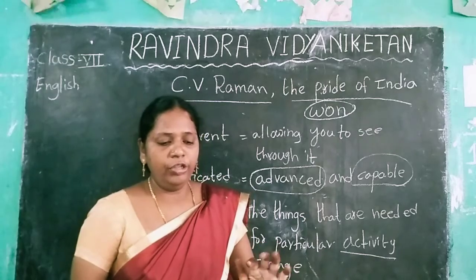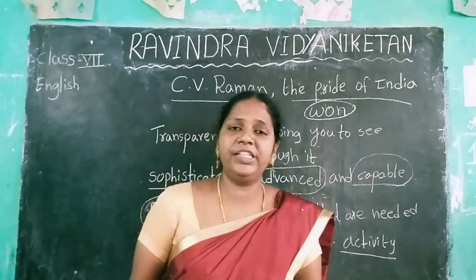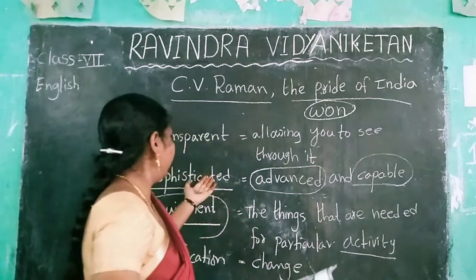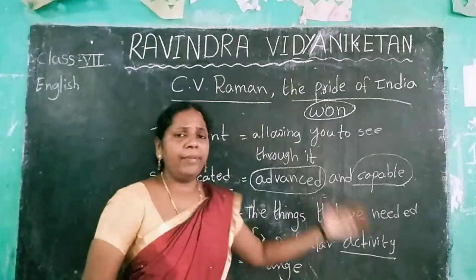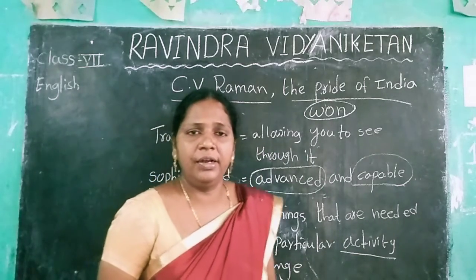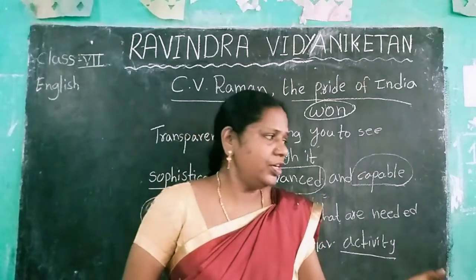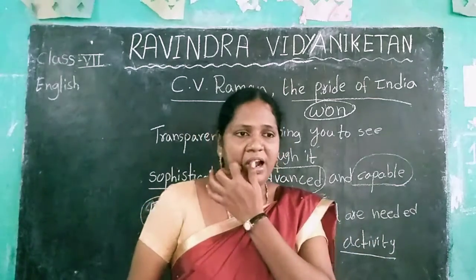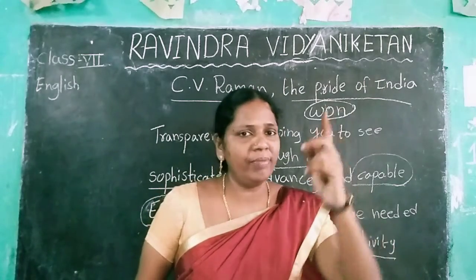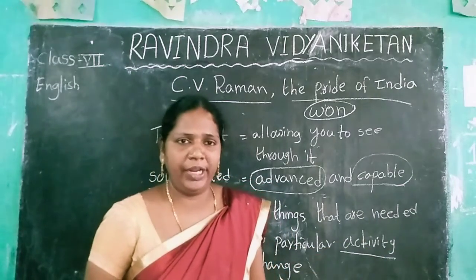The 4th and 5th paragraphs are now completed. Read these paragraphs and underline the hard words — modification, equipment, sophisticated, transparent — and write their meanings. You can search the meanings at the back of the book, but I want similar meanings, so you must refer to a dictionary and write the word meanings and send them to me. Thank you.